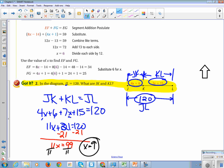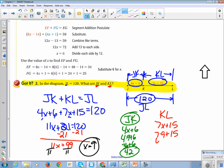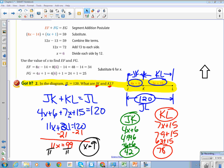Just kidding. We're not done. We just have x equals 9, and actually the question is asking what are JK and KL? So we're going to find JK first, which was 4x plus 6, which was 4 times 9 plus 6, which is 36 plus 6, which is also known as 42. Then we're going to find KL, which is 7x plus 15, which is 7 times 9 plus 15, which is 63 plus 15, which is 78. Now I'm done.